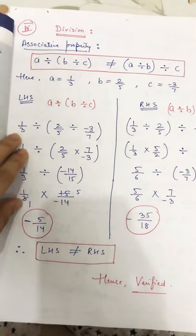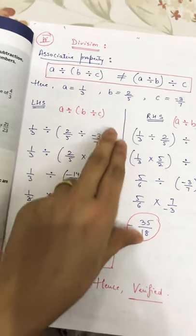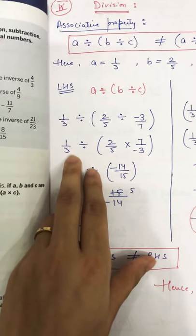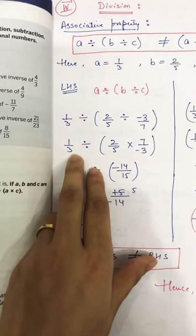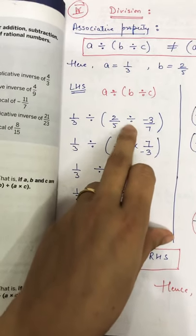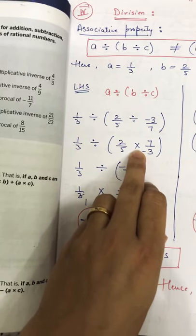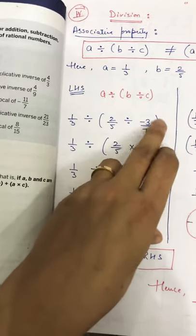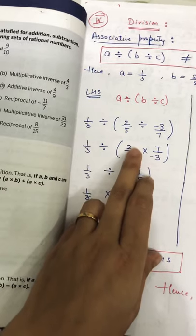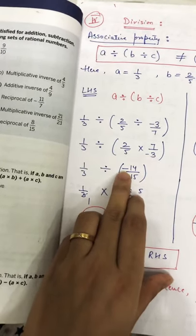On the left hand side, a is 1 by 3, divided by b which is 2 by 5, divided by c which is minus 3 by 7. Now 1 by 3 will be outside as it is, divided by 2 by 5. I am going to remove the divide sign, place a multiply sign, and the next value will be reciprocal. Multiplying: 2 times 7 is 14, 5 times 3 is 15.